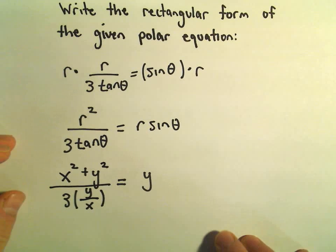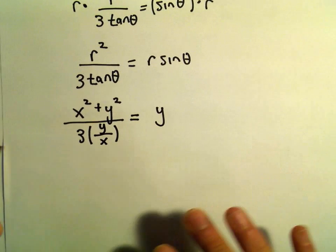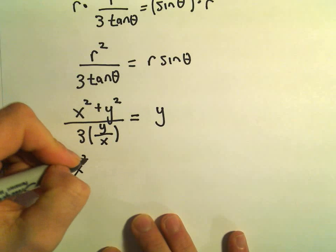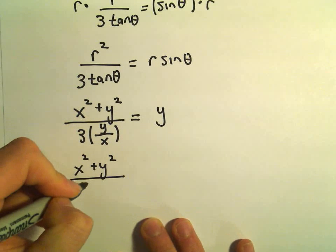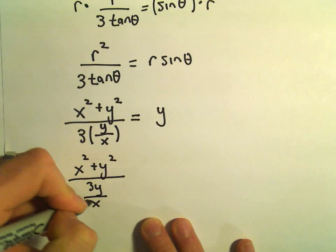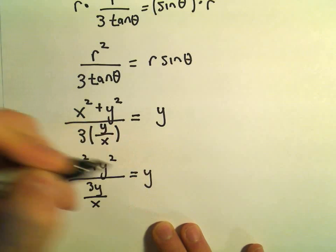And now we can start getting rid of the fractions and cleaning this up a little bit. So we've got x² + y². In the denominator, I could write that as 3y/x = y.